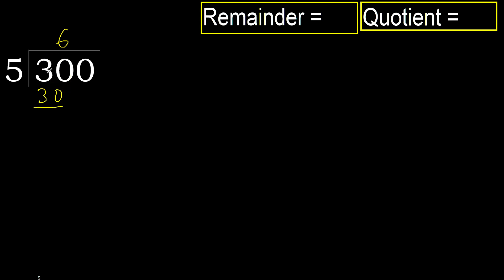Subtract: 30 minus 30 equals 0. Next, eliminate 0 on this side.